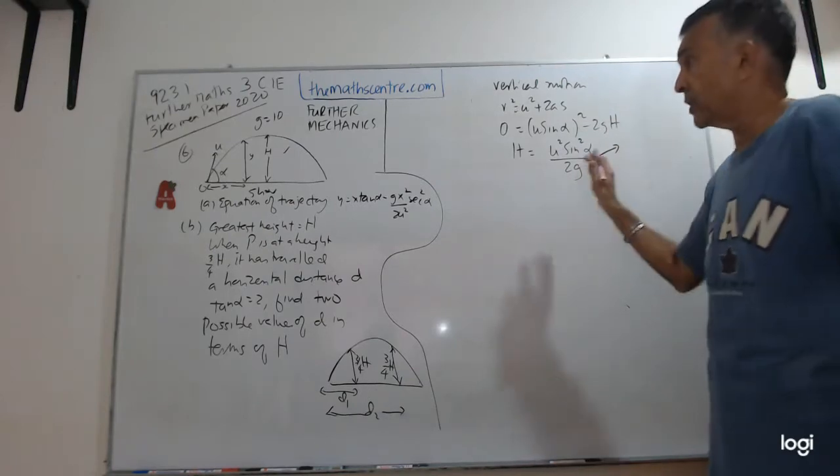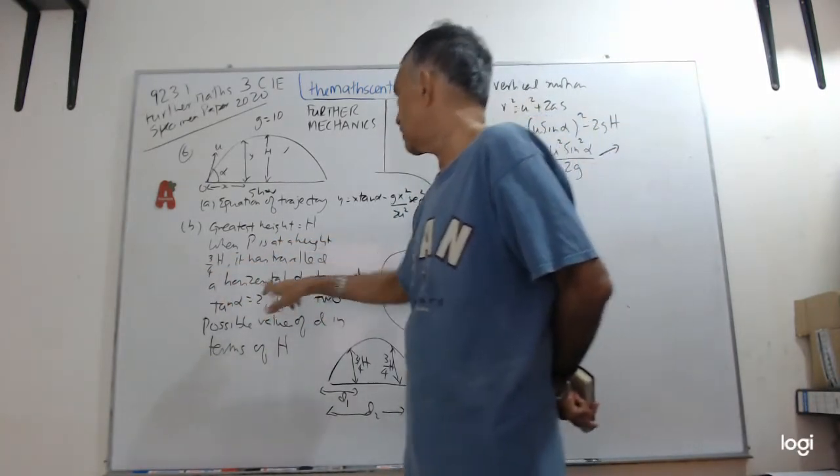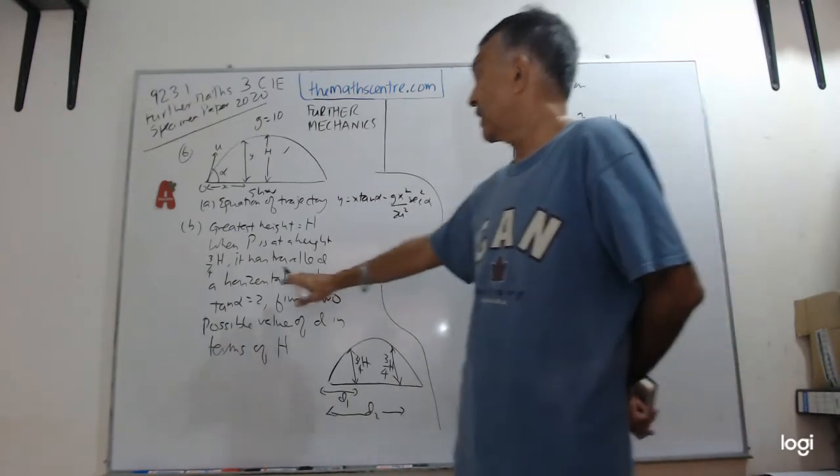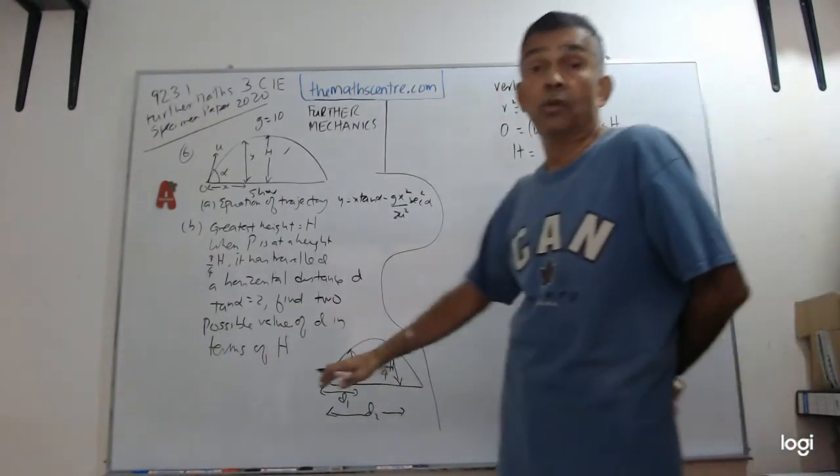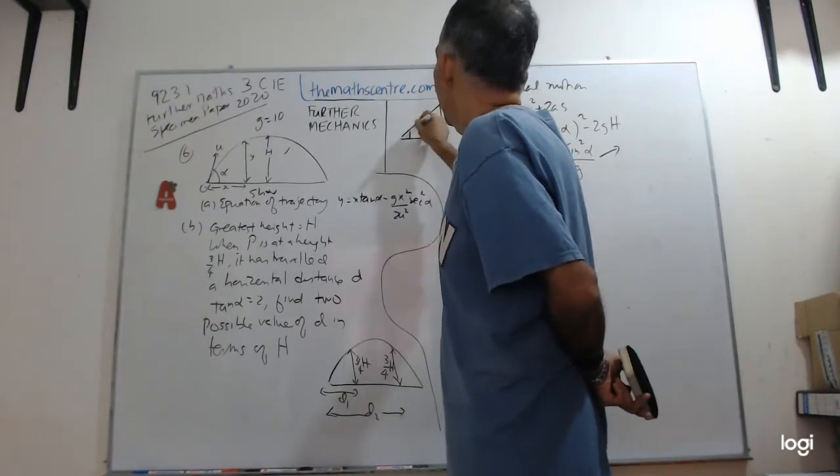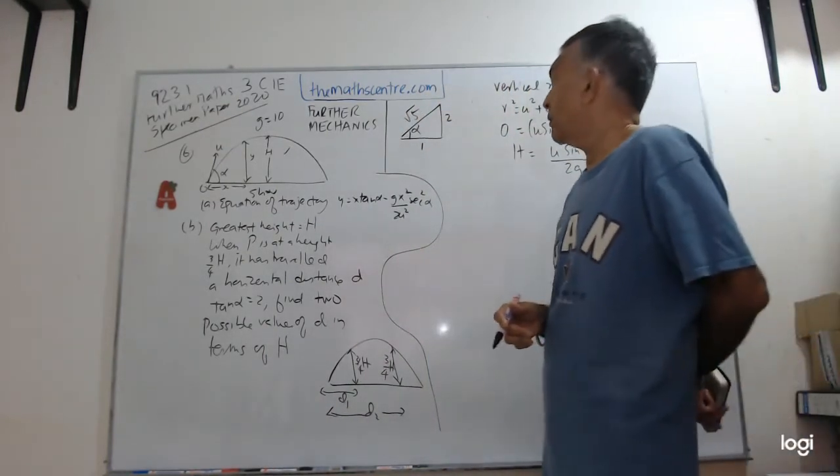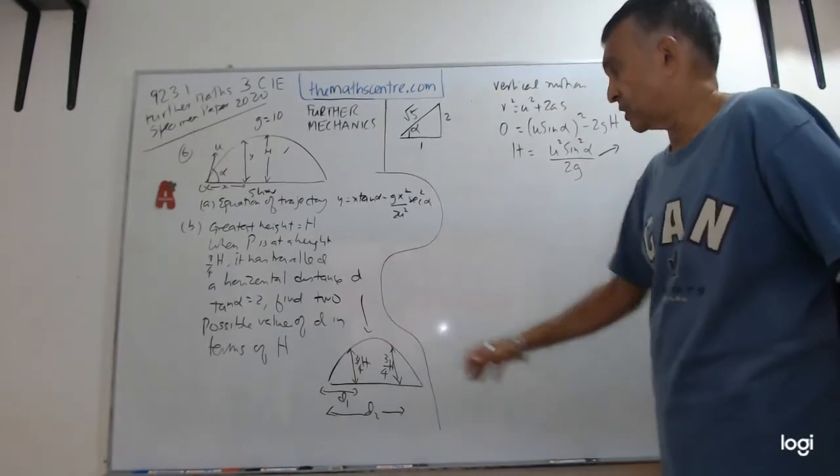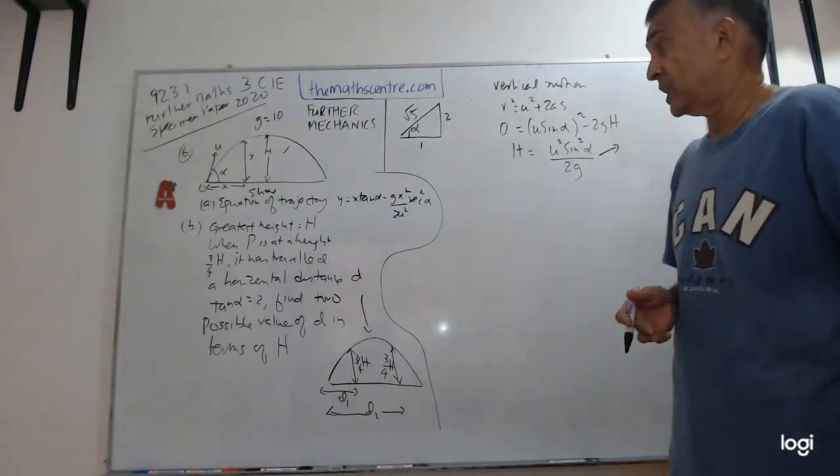They tell us that when P is at a height, when P is at a height 3 over 4H, it has traveled a horizontal distance D. Read the question on the exam paper, on the specimen paper. My writing here leaves much in desire. It has traveled a horizontal distance D. And they give me tan α as 2. You're asked to find the two possible values of D in terms of H. So must be very gentle about this. So they gave me tan α is 2. Let me also write tan α is 2. α is here, 2 is here, 1 is here, and I have. Looks good. Tan α is 2. So my hypotenuse is 4 plus 1 square root of 5. Great. So I've drawn the picture here for you. This is, of course, not in the exam paper. This is the picture that I have drawn. 3 quarter H, 3 quarter H at D1 and D2.